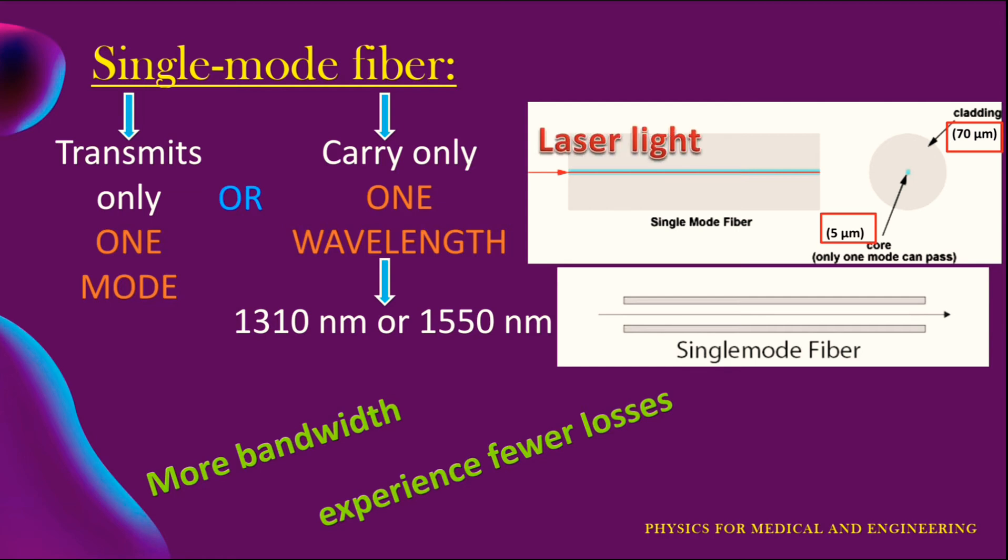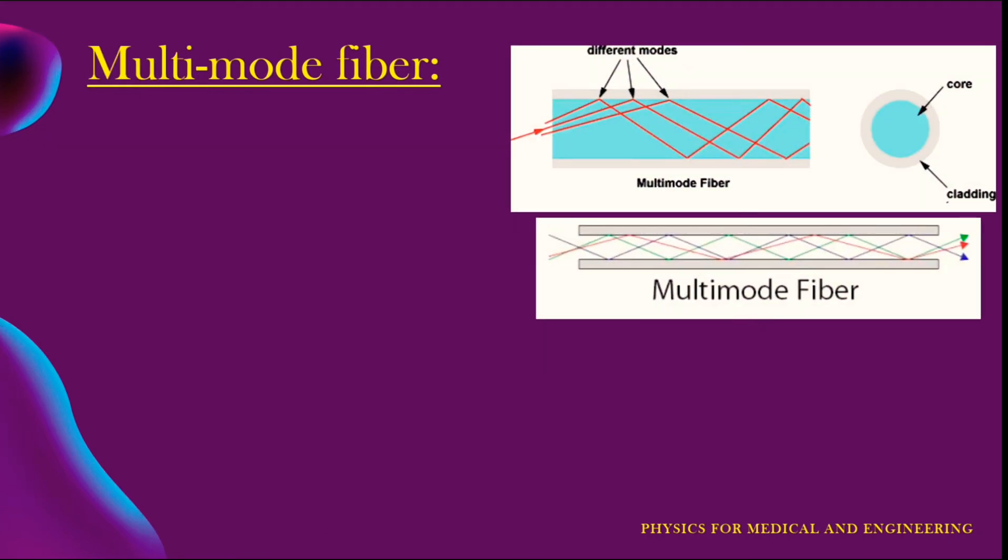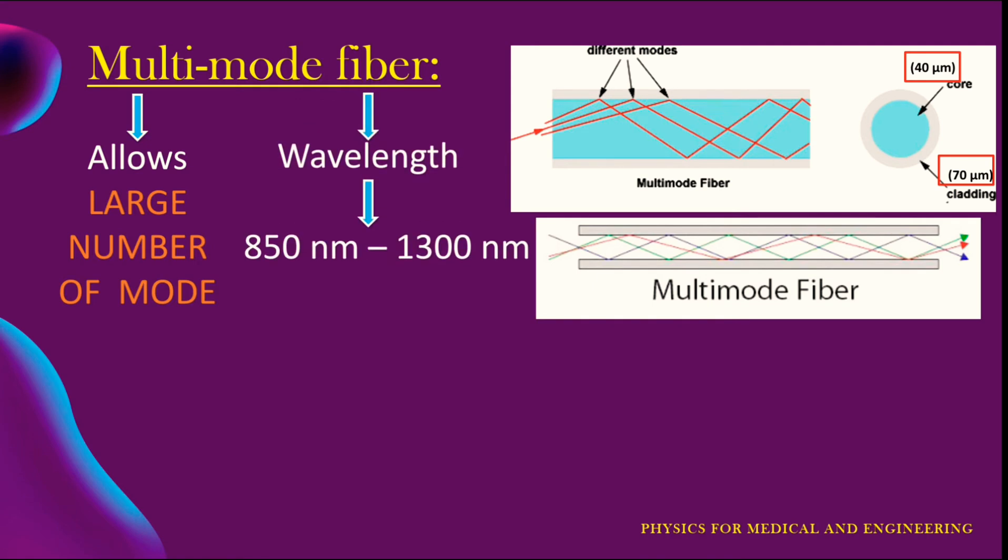Now the second one is multi-mode fiber. As the name implies, this type of optical fiber allows multiple modes of light to travel along their axis. To explain physically, they can do this by having a thicker core diameter. The core diameter is generally 40 micrometer and that of cladding is 70 micrometer. The relative refractive index difference is also greater than single mode fiber.